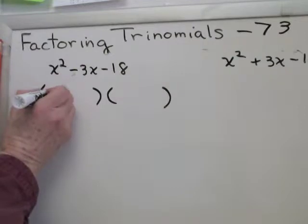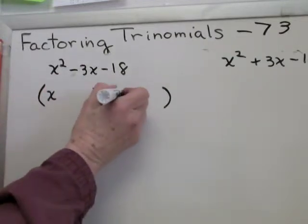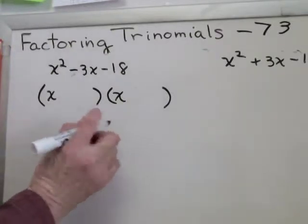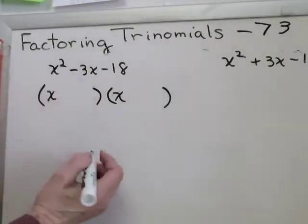Factors of x squared, x times x. That part was easy. The tricky part, factors of negative 18 that add up to negative 3.